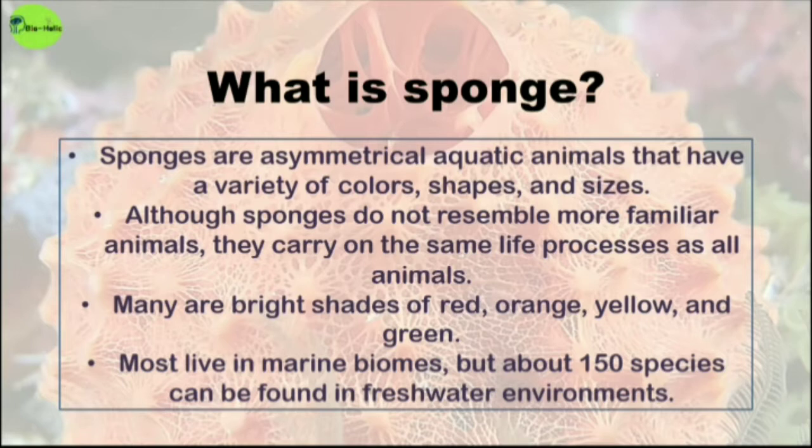Although sponges do not resemble more familiar animals, they carry on the same life processes as all animals. Many are bright shades of red, orange, yellow, and green, and most of the animals live in the marine biosphere. But about 150 species can be found in freshwater environments as well.